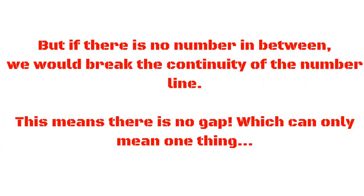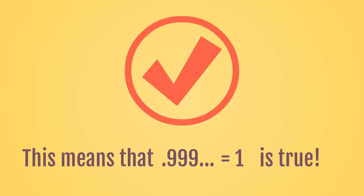But if there is no number in between, we would break the continuity of the number line. This means there is no gap, which can only mean one thing. This means that the statement 0.9 recurring is equal to 1 is indeed true.